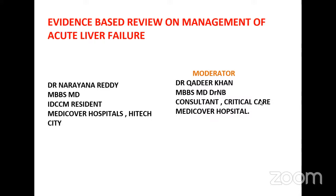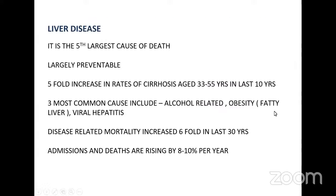Liver disease is the fifth largest cause of death and it is largely preventable. There is a five-fold increase in rates of cirrhosis in the age group 33 to 55 years in the last 10 years. The three most common causes include alcohol-related disease, obesity-related fatty liver, and viral hepatitis. Disease-related mortality has increased six-fold in the last 30 years and admissions and deaths are rising by eight to ten percent per year. This includes acute liver failure, acute-on-chronic liver failure, and chronic liver failure.